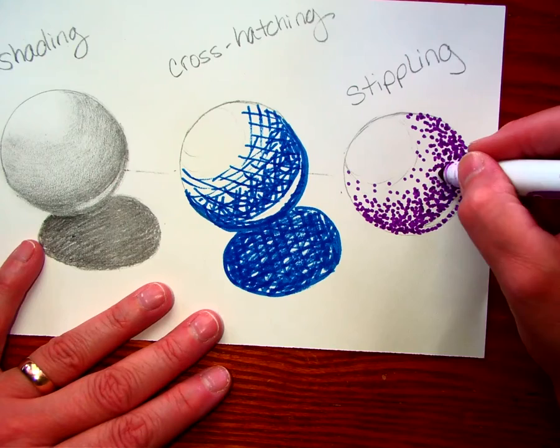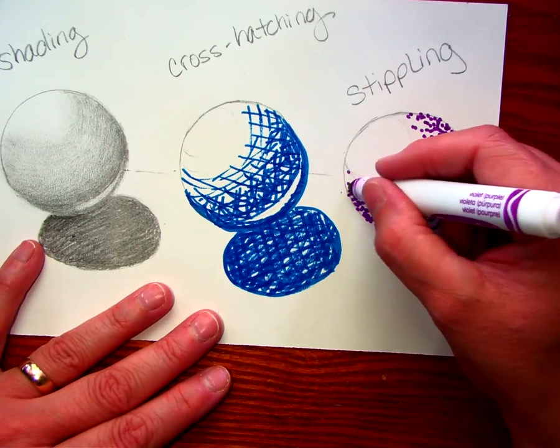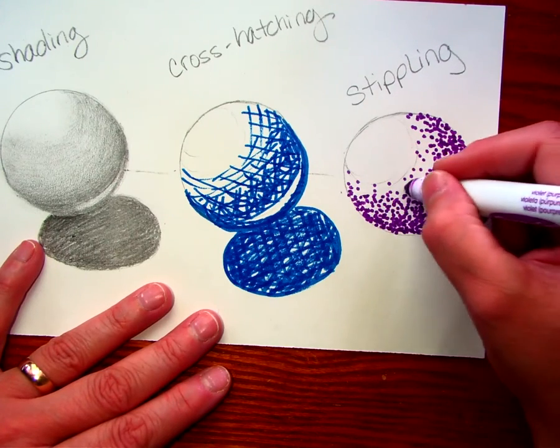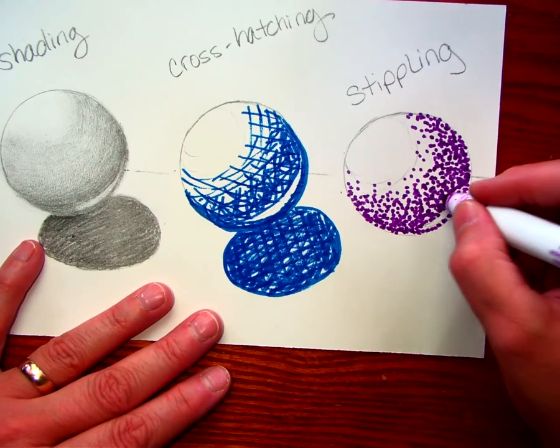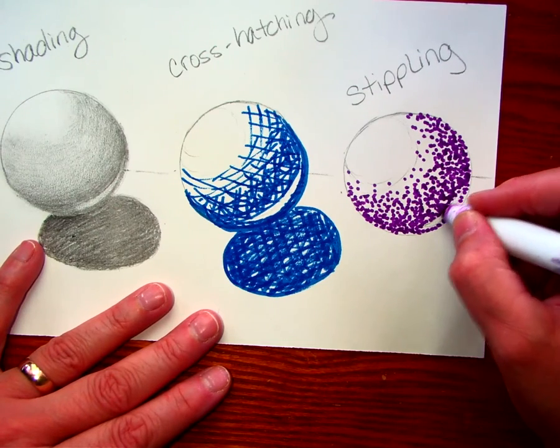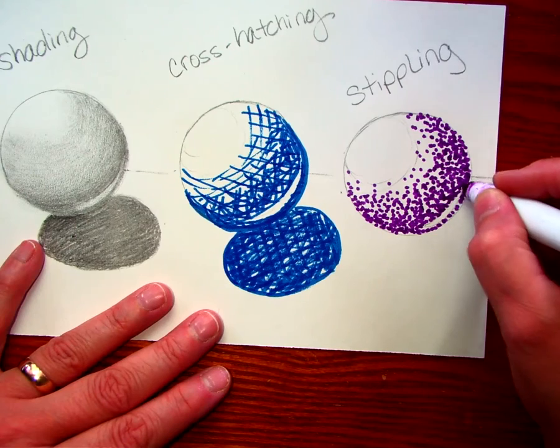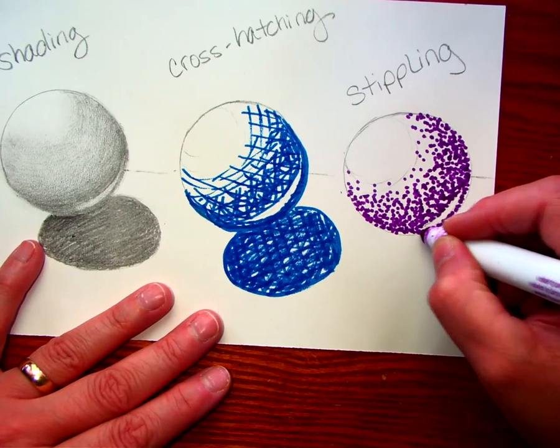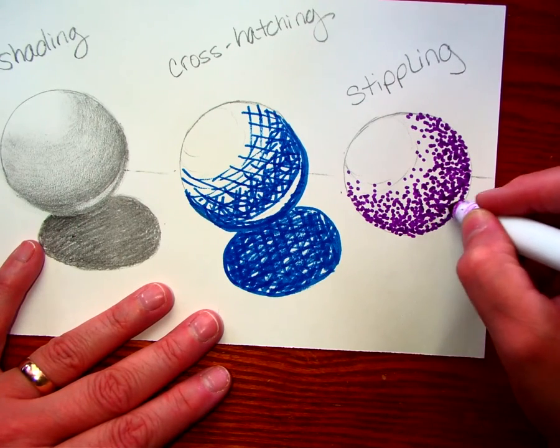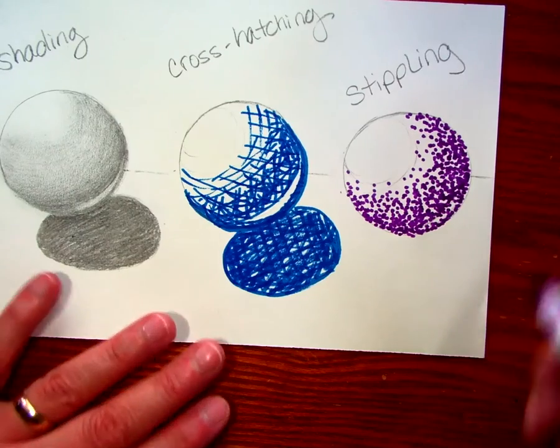So that gives you a little bit of variety on how to add some dimension to your pictures using either shading or cross-hatching or stippling. Any one of those can be used to add value to your pictures.